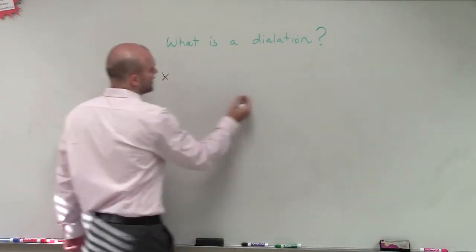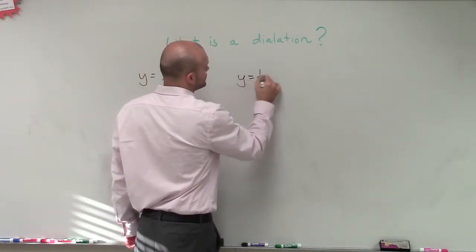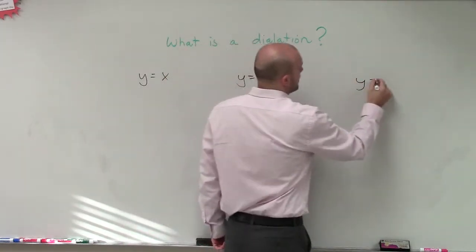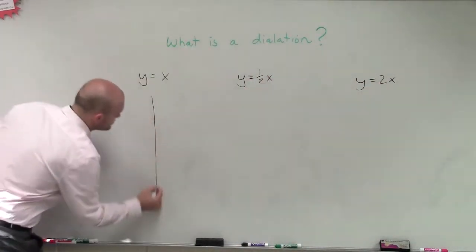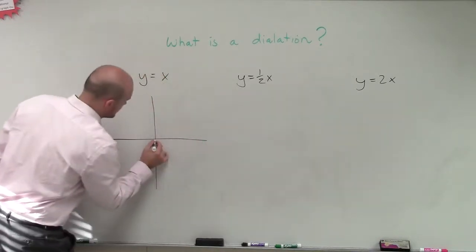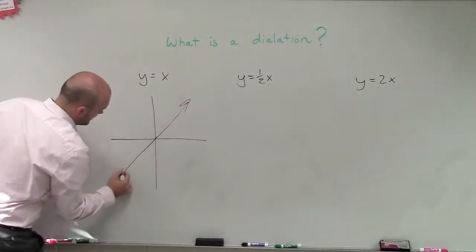Let's look at three linear graphs: y equals x, y equals 1 half x, and y equals 2x. Now, when we look at y equals x, this is what we call our parent graph for the identity function. It looks something like that, right?